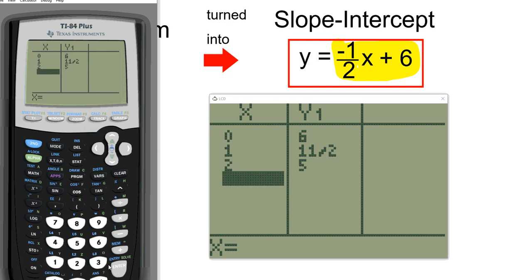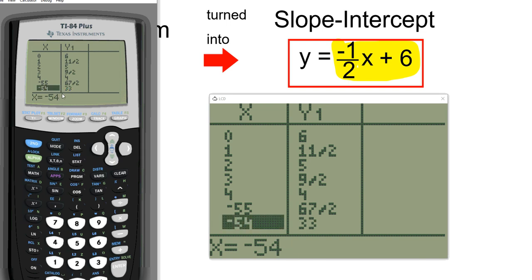Type in 2, and you get 5. 3, and you get 9 halves. Type in 4, you get 4. Type in negative 55, we get 67 over 2. Type in negative 54, 33. You see what I'm saying?